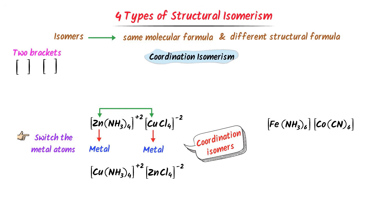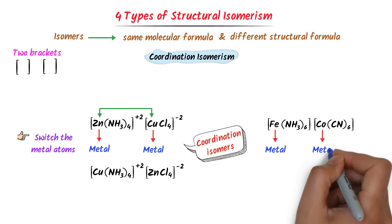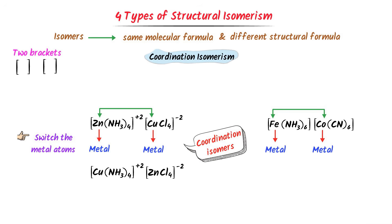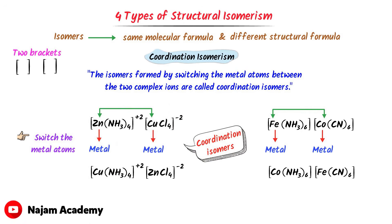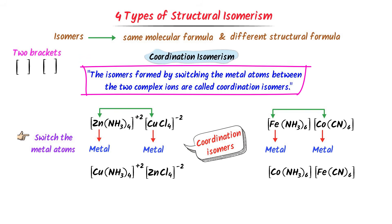Consider another coordination compound where the metal atom is iron in one sphere and cobalt in the other. Switching the metal ions between the two coordination spheres gives [Co(NH3)6][Fe(CN)6]. These two isomers are called coordination isomers. Coordination isomerism is defined as: isomers formed by switching the metal atoms between the two complex ions are called coordination isomers.